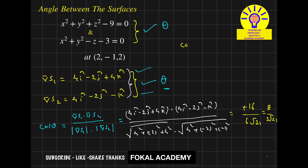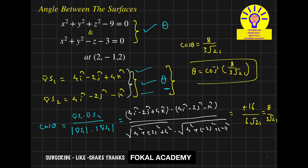So cos θ = 8 / (3√21). From this we get θ = cos⁻¹(8 / (3√21)). This is the angle between these two vectors, and that same angle is the required angle between the two surfaces. Thanks for watching — please subscribe, like, and share.